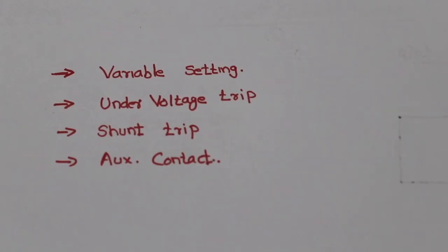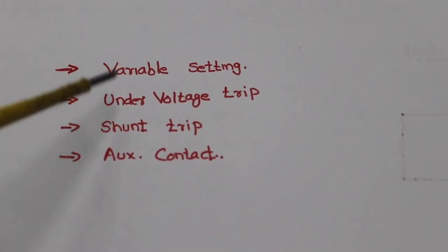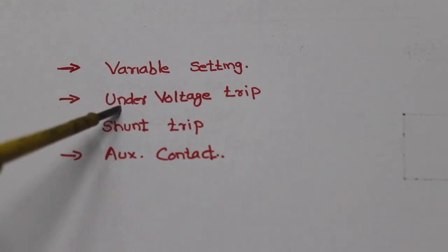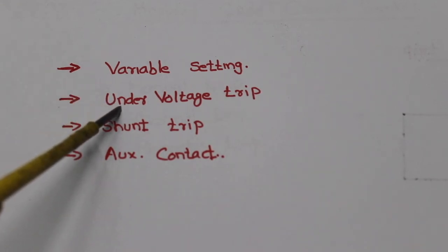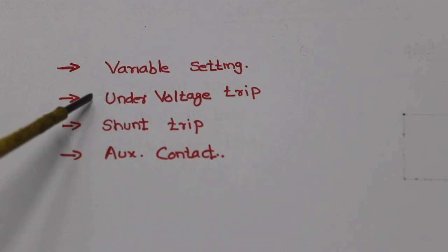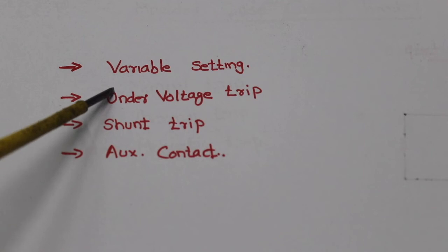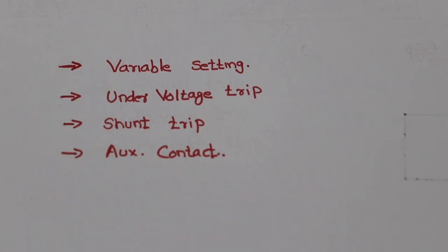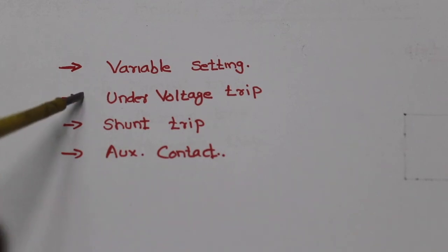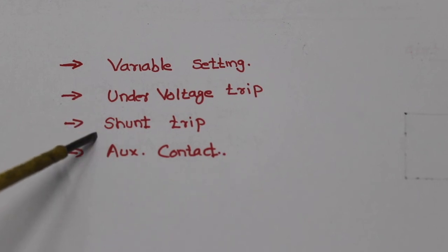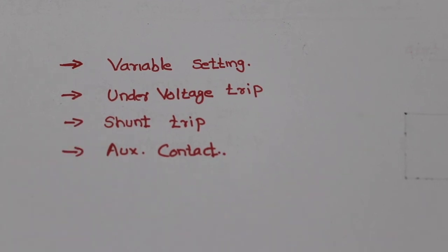This is the under voltage trip. This is for the rated voltage. It is an under voltage trip. In this case, you need to connect it properly. Once it is inside, this operates as an under voltage trip working together with the MCCB operating system.